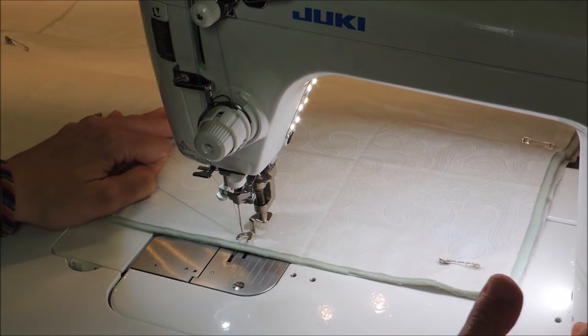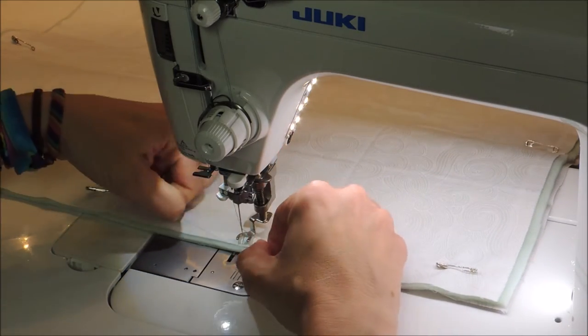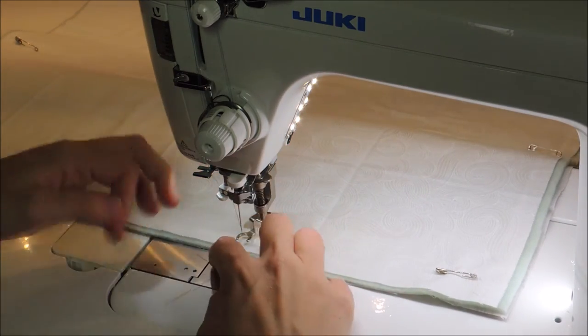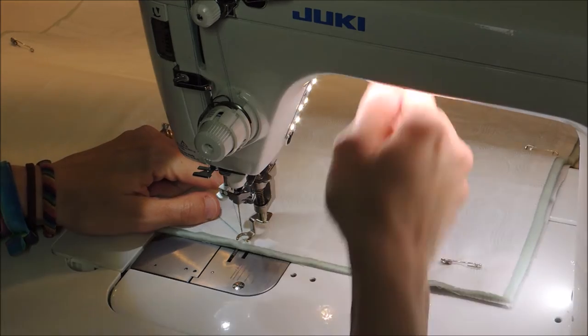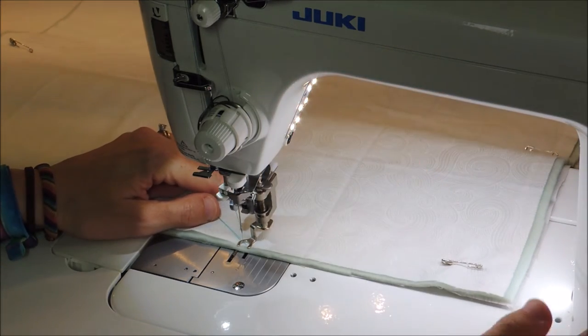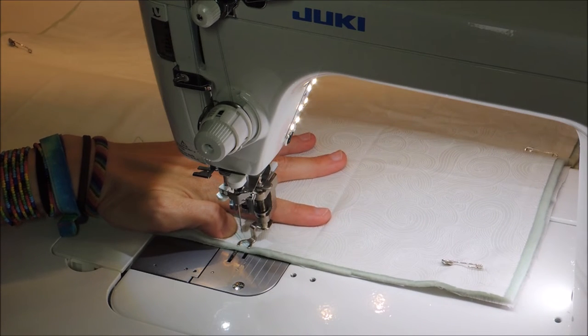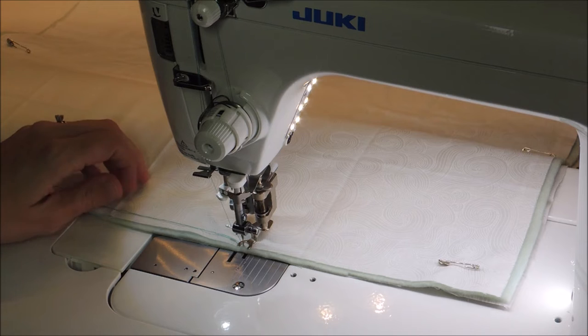So I'm going to move to the edge of my quilt sandwich, put my needle down and back up, use the tail of my thread to swoop under and pull up the bobbin thread. And then what I like to do is simply put my needle up and down in roughly the same spot a few times to kind of lock the stitches in.